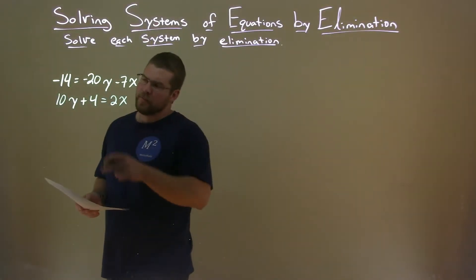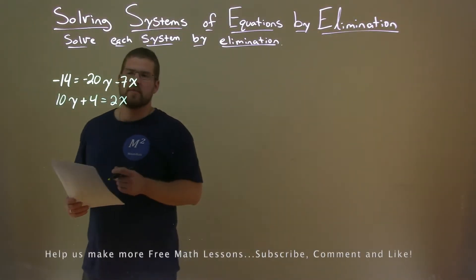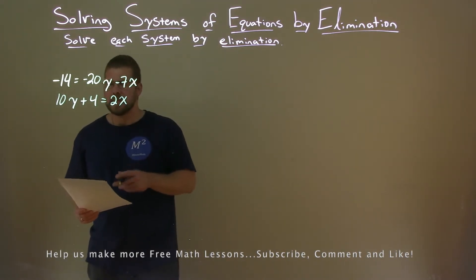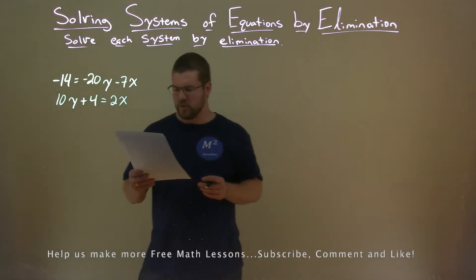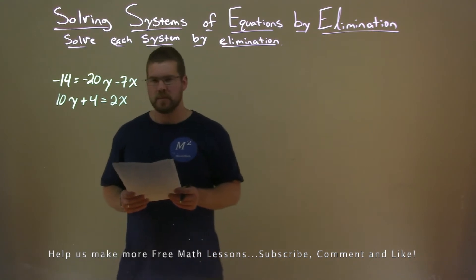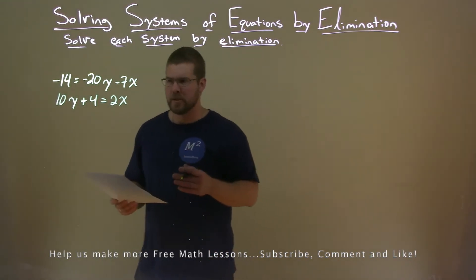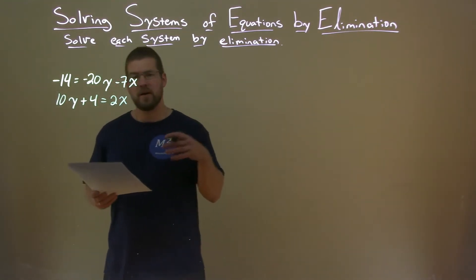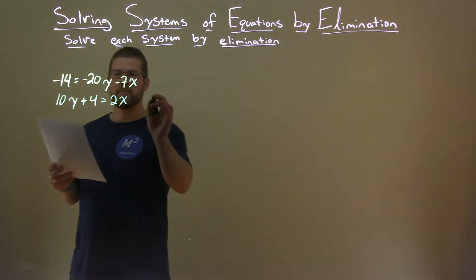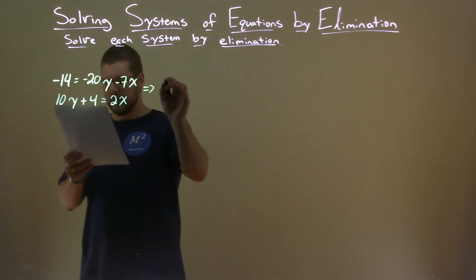We're given this problem here. Minus 14 equals negative 20y minus 7x. 10y plus 4 equals 2x, and we need to solve this by elimination. First we need to rearrange this to have the x and y's on one side and the numbers on the other. First equation is fine, so we can leave it as such.